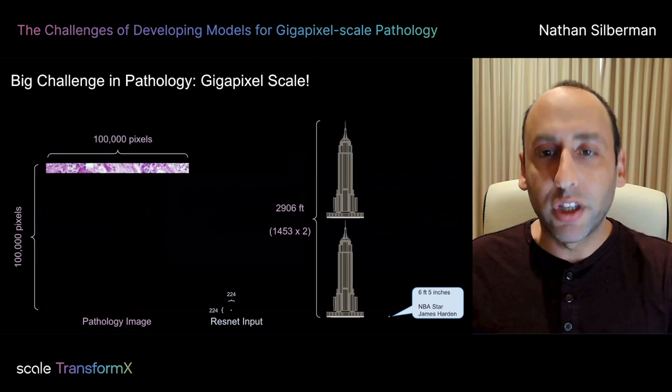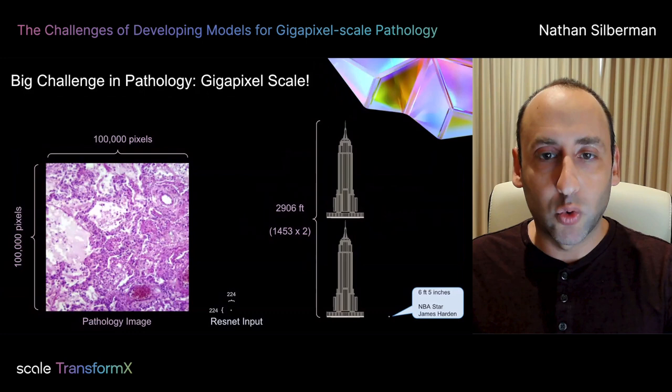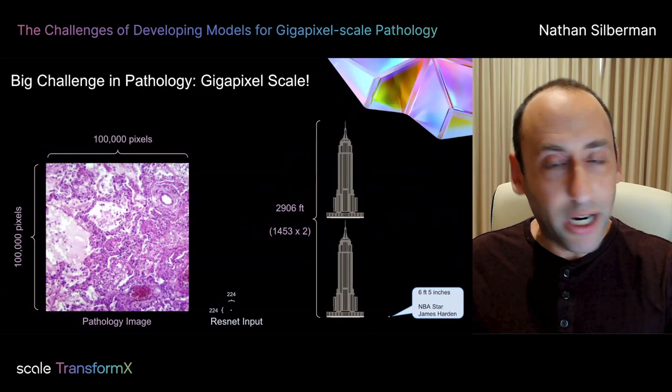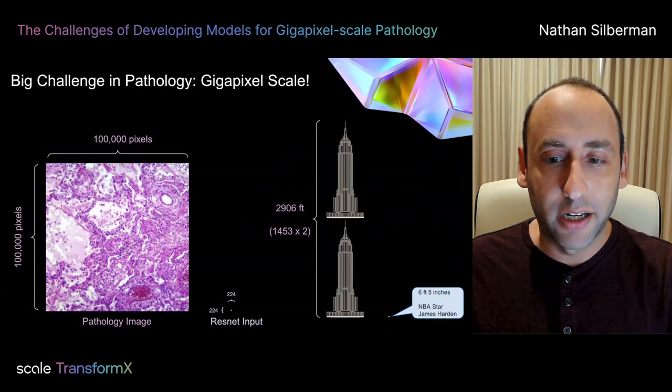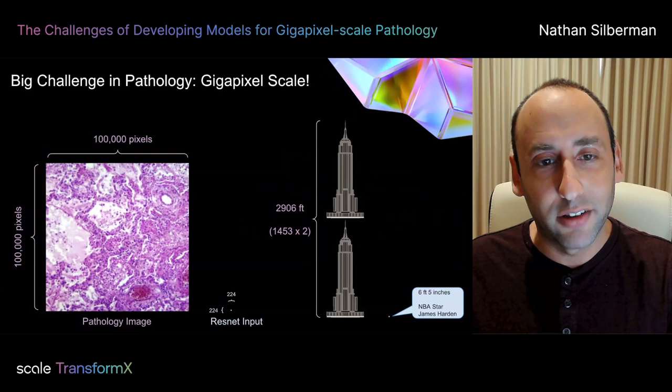Unfortunately, one of the biggest hurdles to operationalizing machine learning solutions in pathology is the sheer scale of each individual pathology image. Each image can easily be 100,000 by 100,000 pixels — compare that to a traditional 224 by 224 ResNet input. This illustration is actually not even to scale. A better comparison might be comparing NBA star James Harden at 6'5" to two Empire State buildings stacked on top of another. That is the scale we're talking about in just height or width.